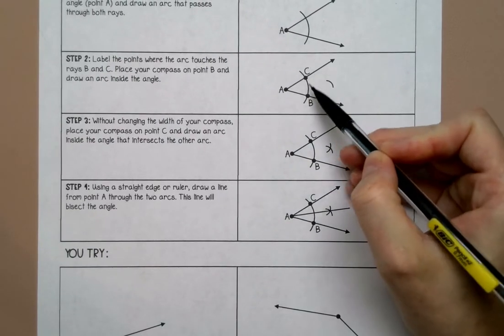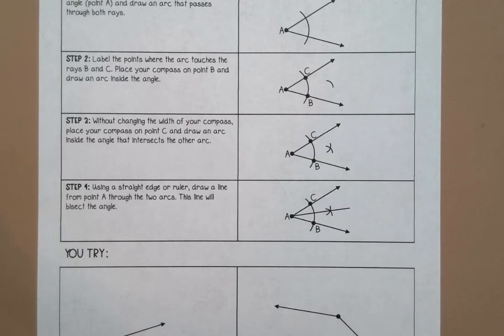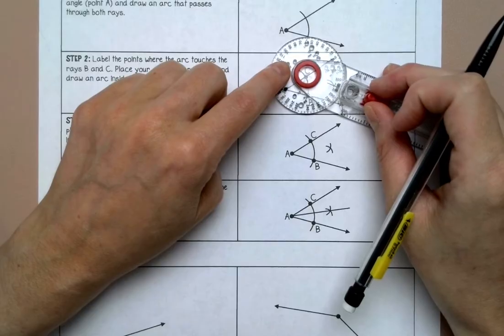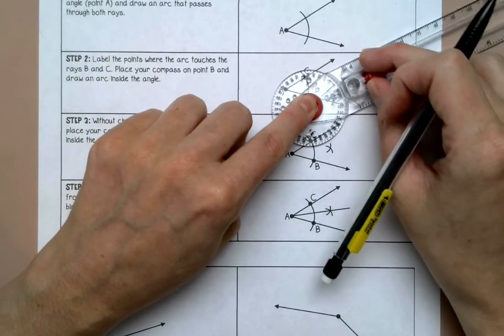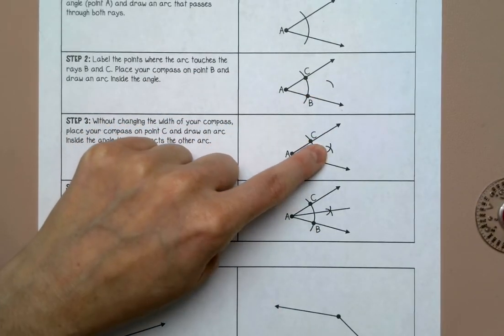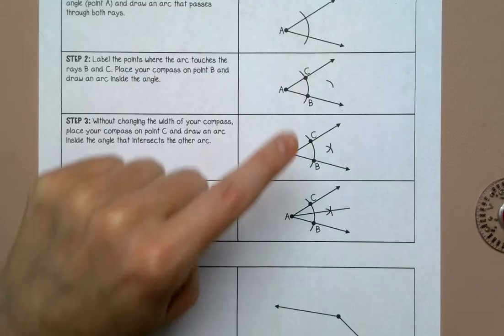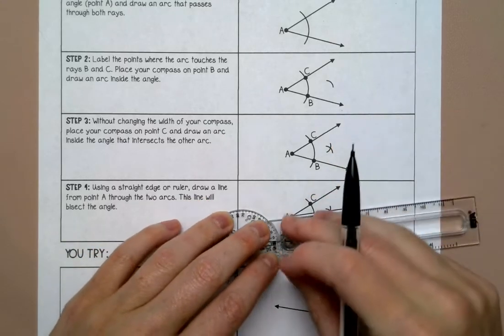I'm going to put points where the arc intersected the rays and without changing the width of my compass I'm going to put my compass on each of those intersections and draw an arc in the middle from both intersections and they should cross in the middle. Then I'm going to draw a straight line from the vertex to where those two arcs crossed.